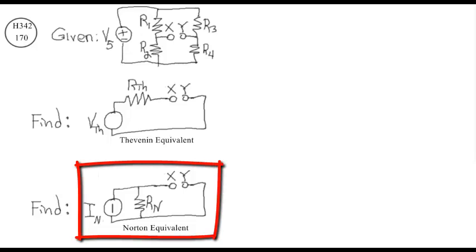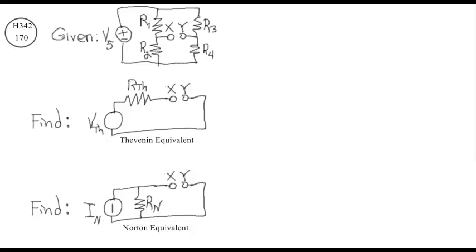This is the Norton equivalent circuit. It contains the original points X and Y, a Norton resistor, and a Norton current source. Notice that the Norton resistor and the Norton current source are in parallel. Notice that the Norton current direction is not shown — it's important to include the Norton current direction, but we have to wait until we can determine that direction.